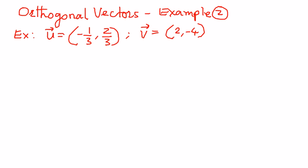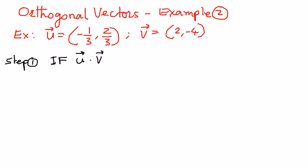As a first step, we're going to check the condition of perpendicularity. The condition is: if vector u dot vector v is equal to 0, then the two vectors are perpendicular.